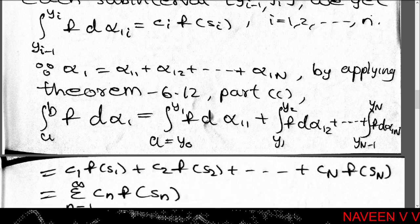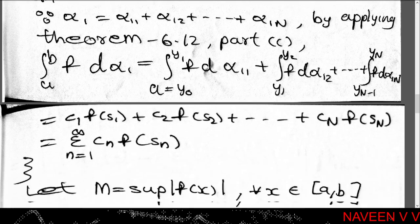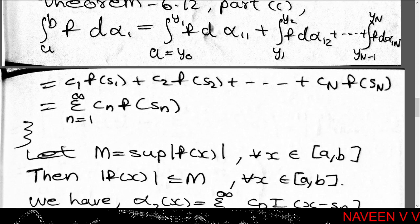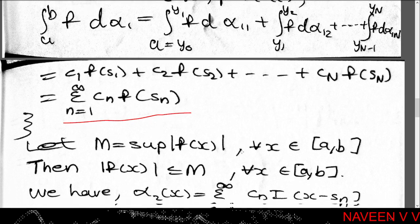Since α₁ = α₁₁ + α₁₂ + ... + α₁N, by theorem 6.12: ∫(a to b) f dα₁ = ∫(y₀ to y₁) f dα₁₁ + ∫(y₁ to y₂) f dα₁₂ + ... + ∫(y_{N-1} to yN) f dα₁N = c₁·f(s₁) + c₂·f(s₂) + ... + cN·f(sN). That is, ∫(a to b) f dα₁ = Σ(n=1 to N) cₙ · f(sₙ).